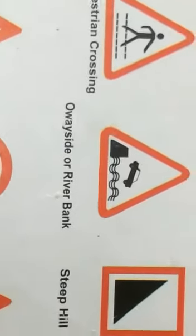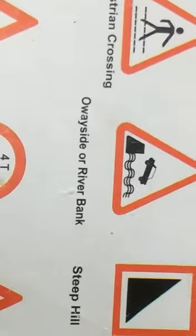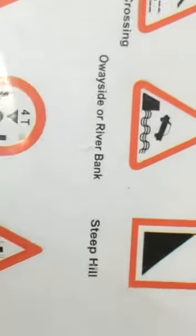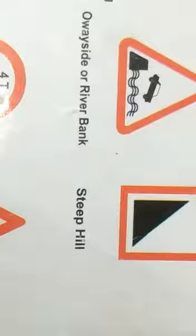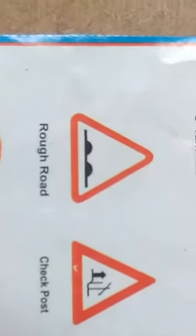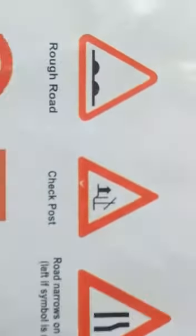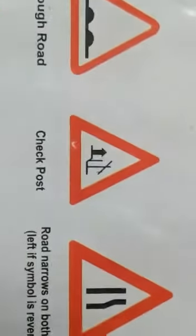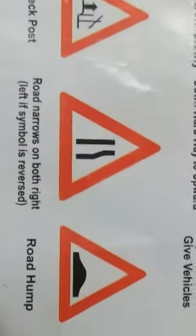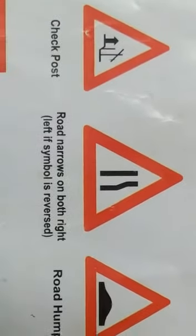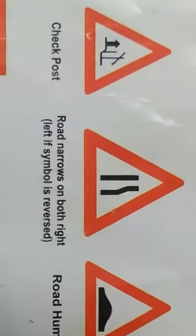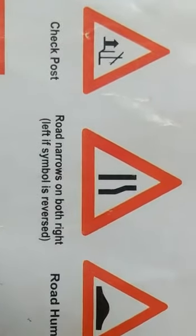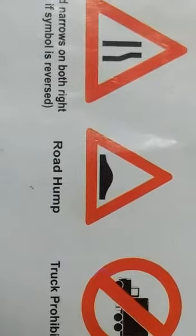This is roadside or river bank. This is steep hill. And this symbol is rough road. And this symbol is check post. And this symbol is road narrows — on the right side if the symbol is reversed, it means left. This is road hump.